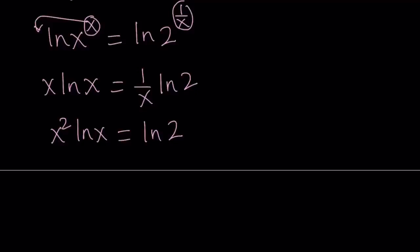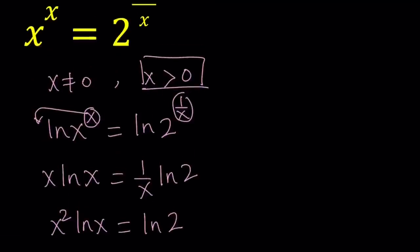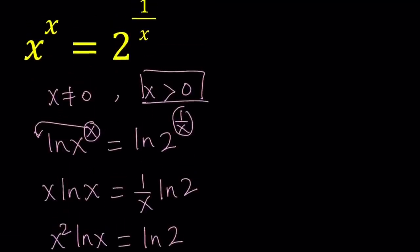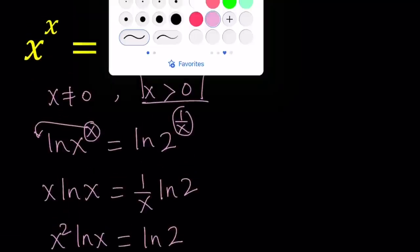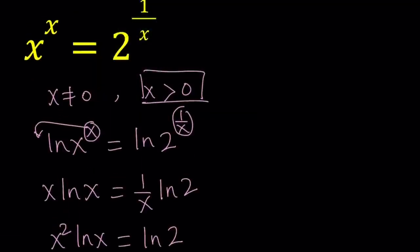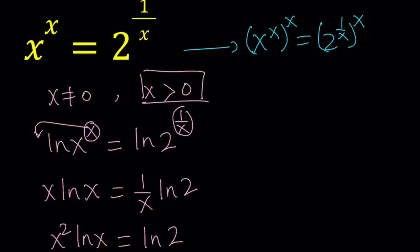We could also get the same result by raising both sides to the power x first. That gives us x to the power x to the power x equals 2 to the power 1 over x to the power x. Since x is positive, x cancels out and the exponents multiply, giving us x to the power x squared equals 2. So that's another approach, but eventually you get the same thing.